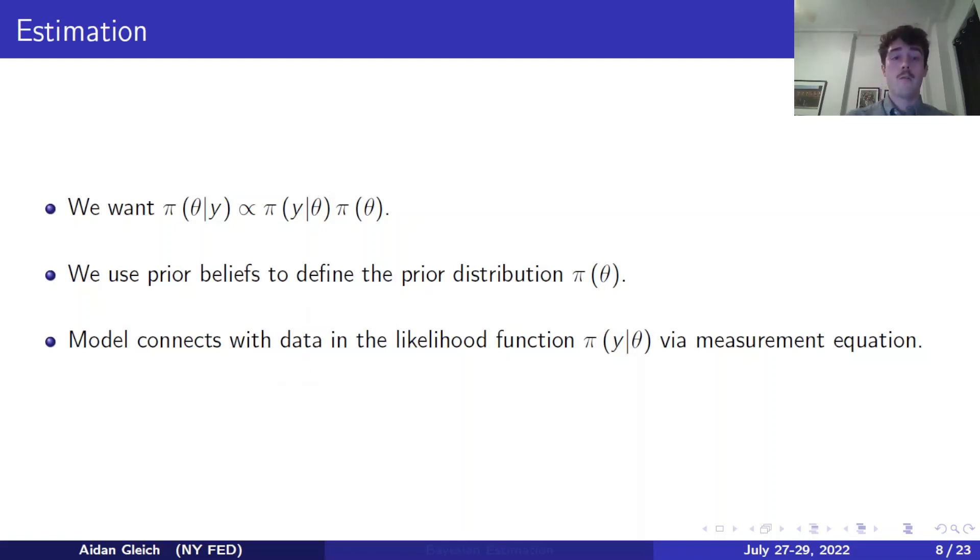Now, those equations were functions of the parameters. So, of course, to use this model in the real world, we need a way of estimating the parameters. On the DSGE team, we use Bayesian methodology, which means that we are going to conduct inference about the parameters through the posterior distribution. That is the distribution of the parameter vector theta, conditional on observed data y. We're going to use the prior distribution, which summarizes our prior beliefs about the parameter vector theta, as well as the likelihood function, which connects the model to the data.